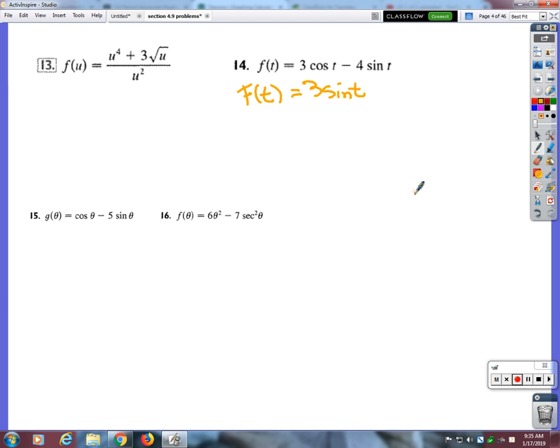Which means that the anti-derivative of sine is negative cosine. So that means this is going to switch around to be plus cosine t plus c.